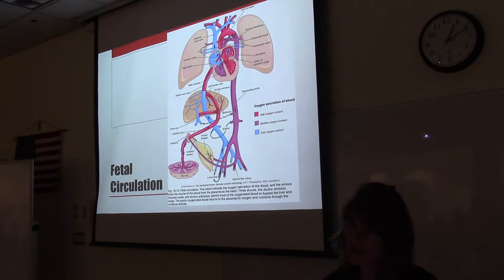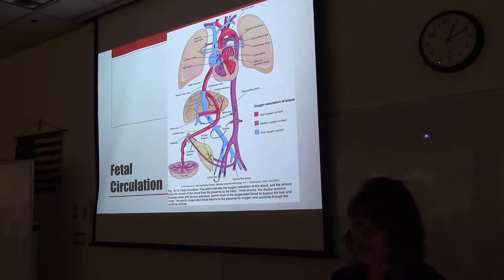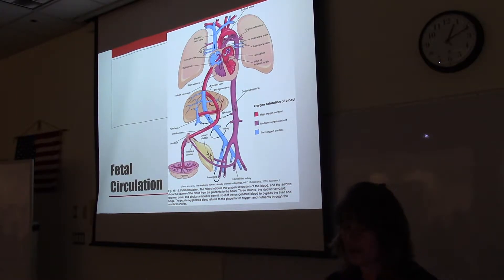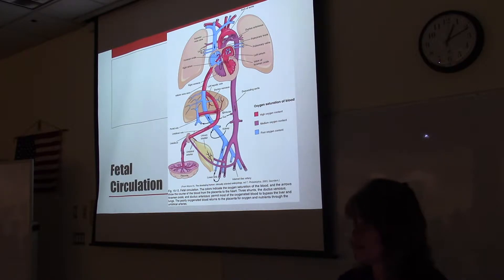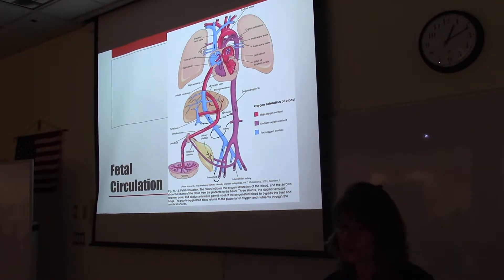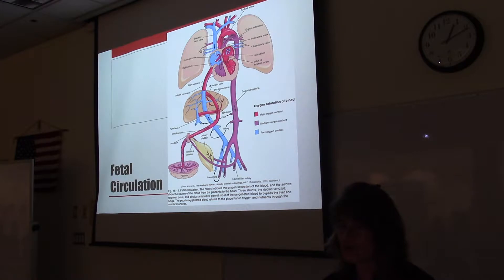That's one pathway. The second pathway is blood coming into the right atrium can also go through the opening between the right atrium and the left atrium — that's the foramen ovale — and get into the left side of the heart that way. Blood that gets into the left atrium goes into the left ventricle, and when the heart contracts, it pushes the blood into the aorta. So there are two pathways for blood to get to the aorta.